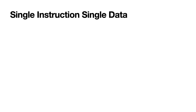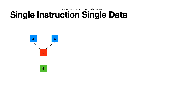Before we talk about Single Instruction Multiple Data, we need to talk about what Single Instruction Single Data means. So let's load a little example here. We have two operands: four and four. If we add them together, it makes eight. That means we have one single instruction, which is addition, with one data — four — which makes eight. So there's Single Instruction Single Data. We only have a maximum of two operands we're dealing with at a time.